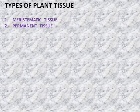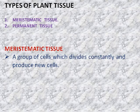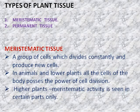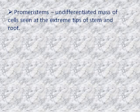Plant tissue is of two types: meristematic and permanent tissue. What is meristematic tissue? A group of cells which divides constantly and produces new cells. Meristematic cells are those which are continuously dividing and forming new cells. In animals and lower plants, all the cells of the body have the power of cell division. But in higher plants, certain regions show meristematic activity like stem tip and root tip. These tips have an undifferentiated mass of cells known as pro-meristems.